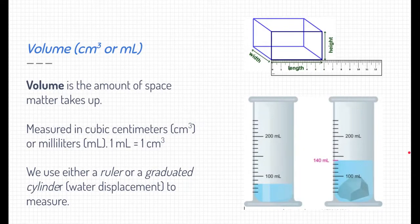Volume is the amount of space matter takes up. Volume can be measured either in cubic centimeters or milliliters, and they both are equivalent to one another. Cubic centimeters is typically done with a ruler. You can see up here, here is a box measured length times width times height to find the volume.